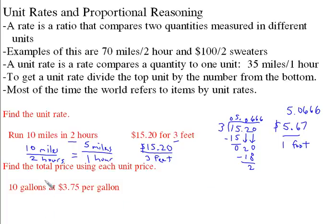Here is to find the total price using each unit price. If you were to buy 10 gallons at $3.75 per gallon, all you're doing is you're saying it's $3.75 per gallon, and you're having 10 of them. So all you do is you multiply. 10 times this, which is just going to be 37.5.